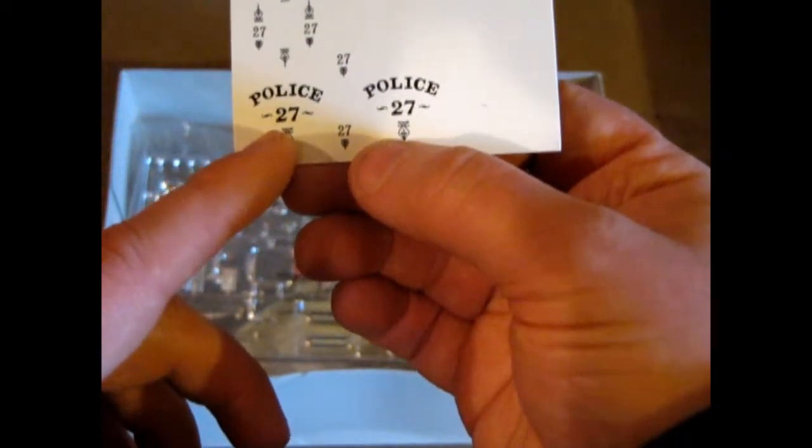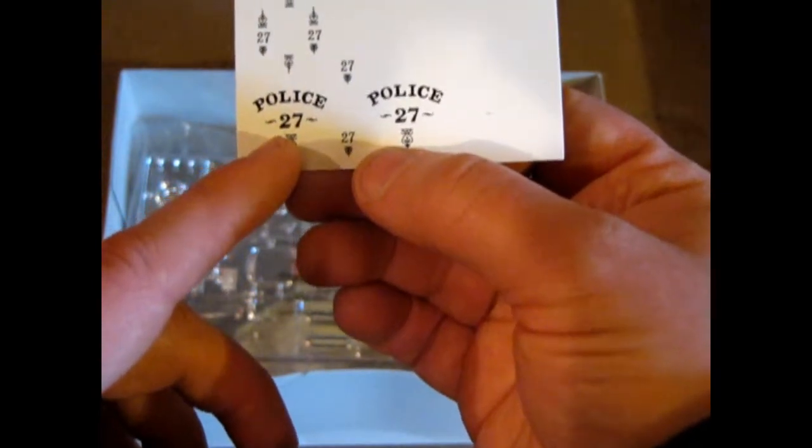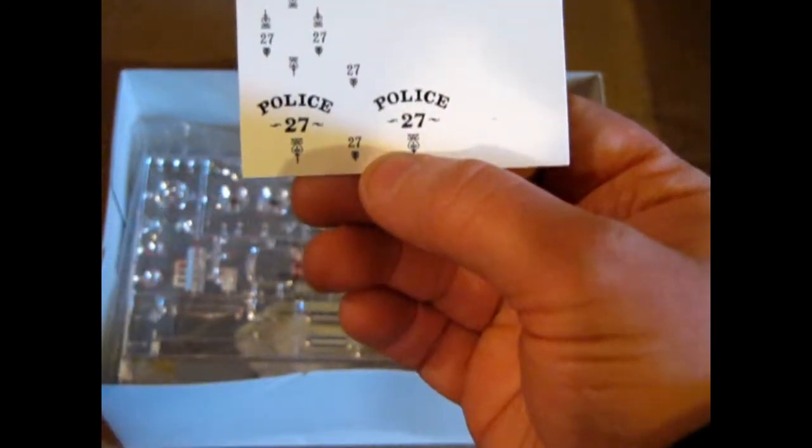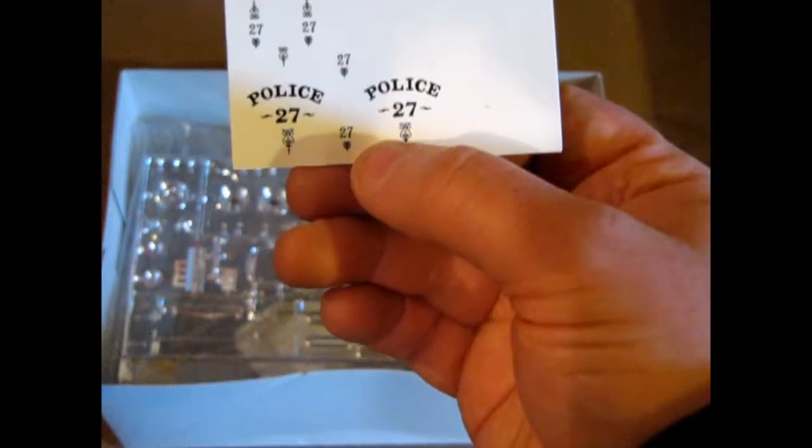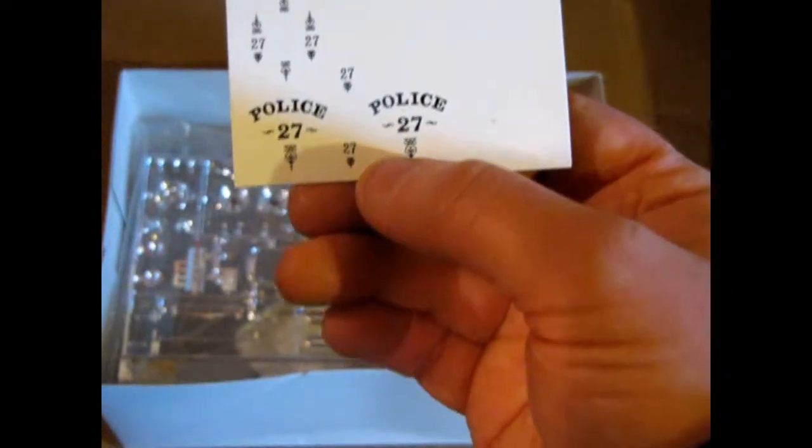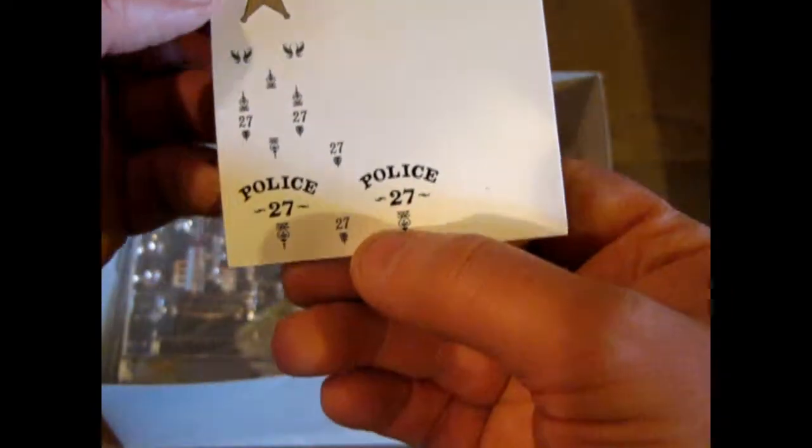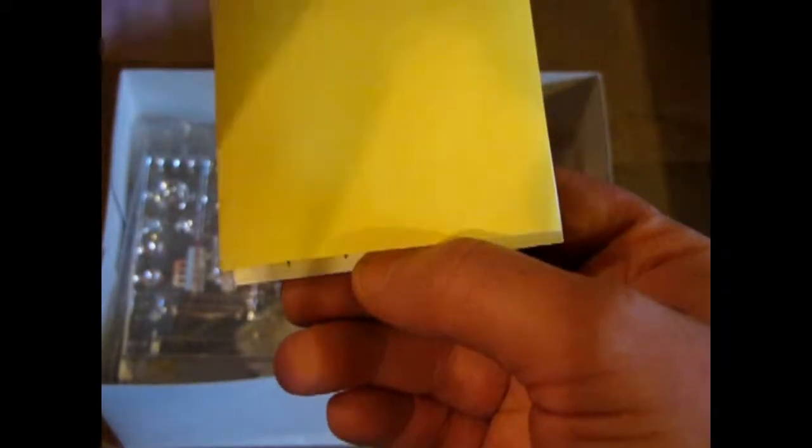Because your 27 Model T is going to be precinct 27, whereas if you had a 25 Model T it would be precinct 25. So you can never have the two cars join each other on the police department. But anyway.